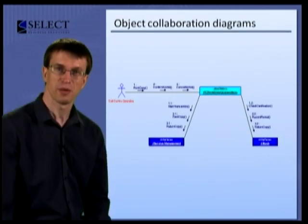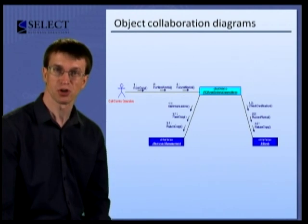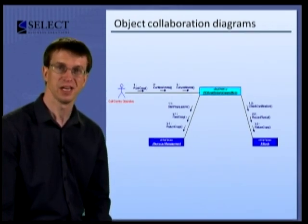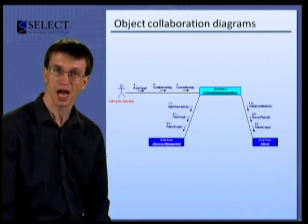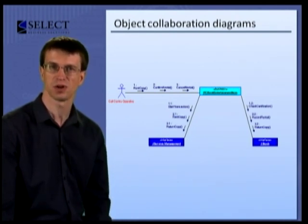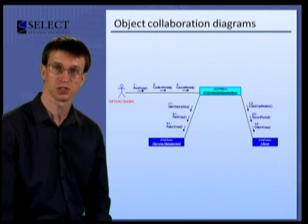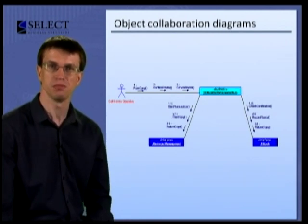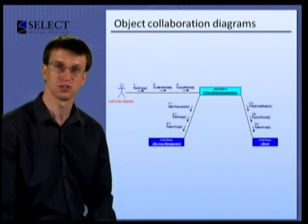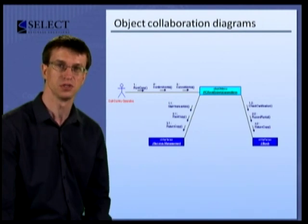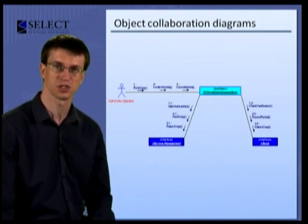An Object Collaboration diagram models the structural dimension of a use case scenario by graphically illustrating the interactions between actors and instances of classes. Object Collaboration diagrams provide alternative representations of an object sequence diagram, each one modelling a different execution thread or scenario through a use case, by showing the flow or sequence of messages between associated objects.